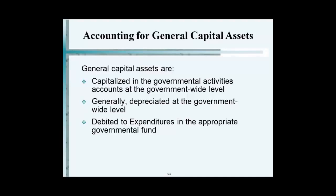Under the full accrual basis, you record capital assets and you also depreciate them. When you depreciate something, you assign the depreciation to the different functions. For example, if you had five functions and a municipal building was used for all five, you allocate depreciation to each one of those functions.